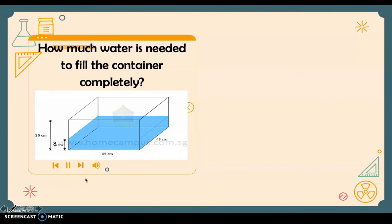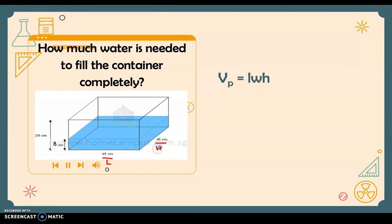Next: how much water is needed to fill a container completely? This container is shaped like a prism and already has some water in it. We use the formula length times width times height. The length is 65 centimeters, the width is 45 centimeters, and we only need to fill from the current water level to the top, so the height used is 12 centimeters.